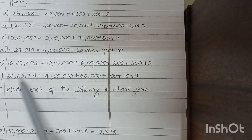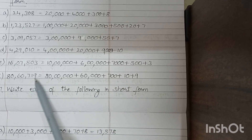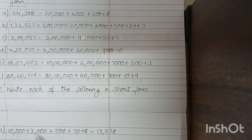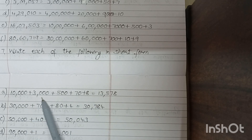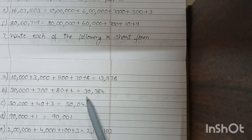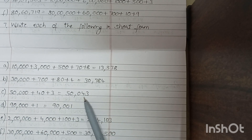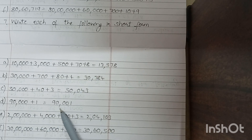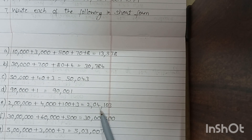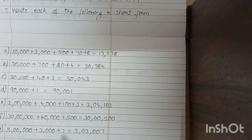Write each of the following in short form. Add and write. A. Answer: 13,578. B. Answer: 30,784. C. Answer: 50,043. D. Answer: 90,001. E. Answer: 2,04,103. F. Answer: 30,60,500. G. Answer: 5,03,00,007.